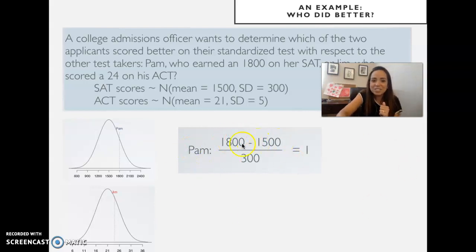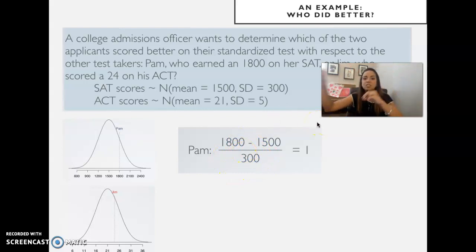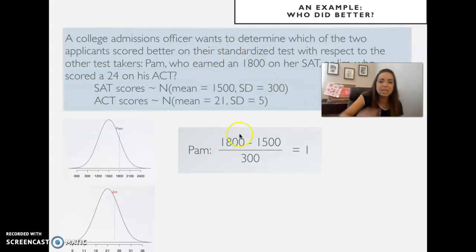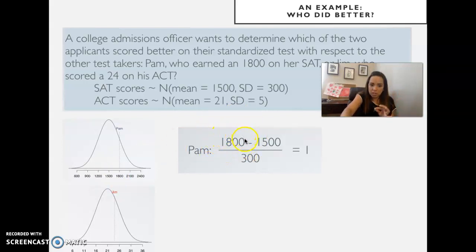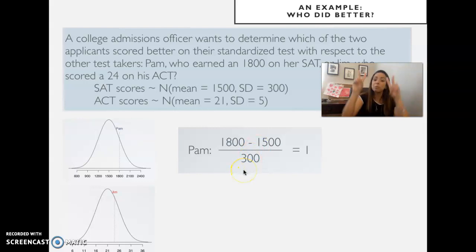If the difference were 600 and I divide by 300, that would indicate 2 standard deviations above the mean. For example, a score of 2100: 2100 minus 1500 is 600, divided by 300 is 2 standard deviations above the mean.